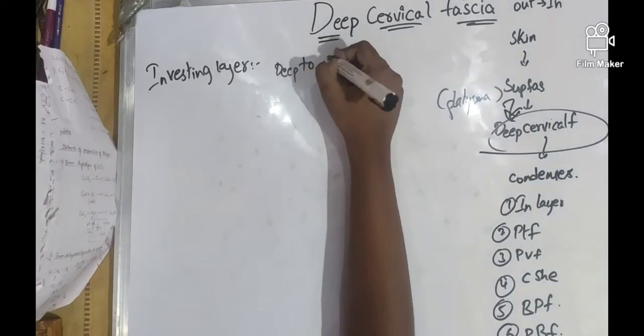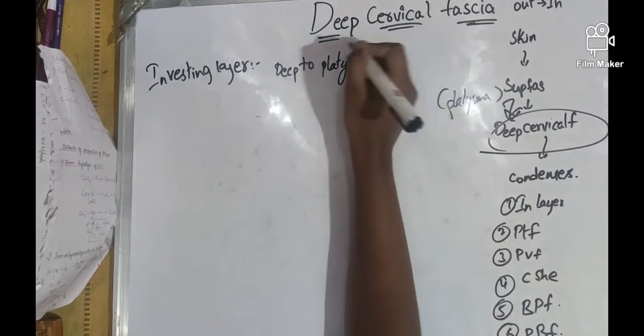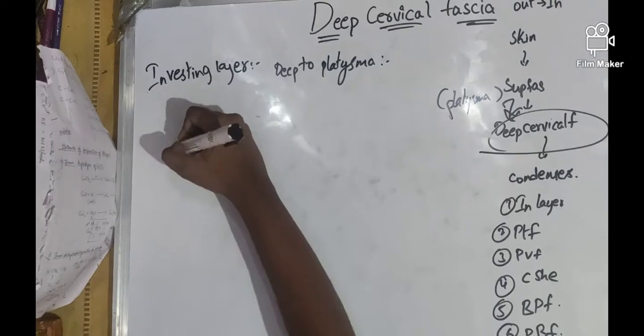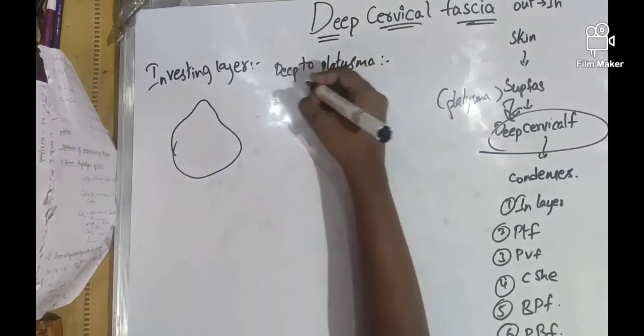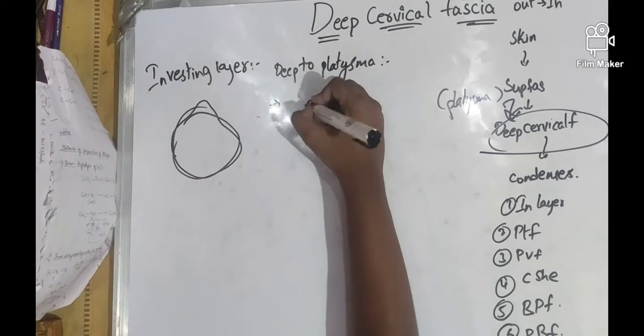When we see this in transverse section, the deep cervical fascia appears like a collar and it surrounds the neck like a collar.